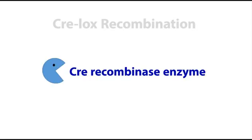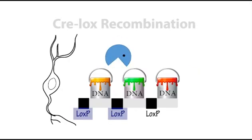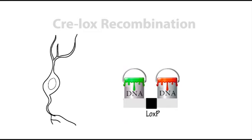A protein called Cre will randomly choose a pair of Lox-P sites to cut, and will remove whatever paint pots are to the left of the cut.